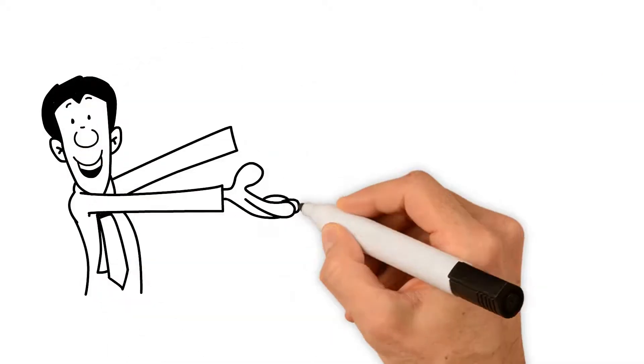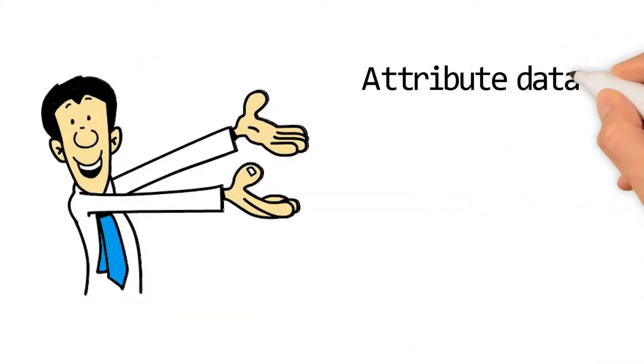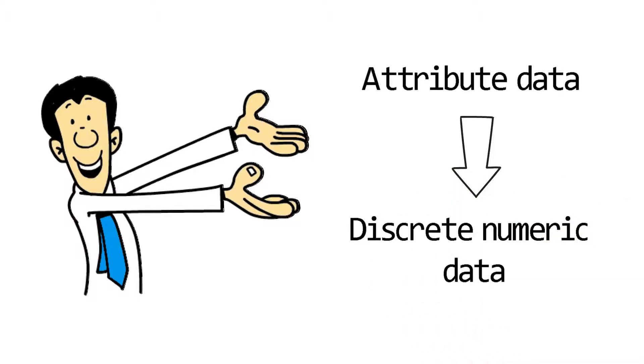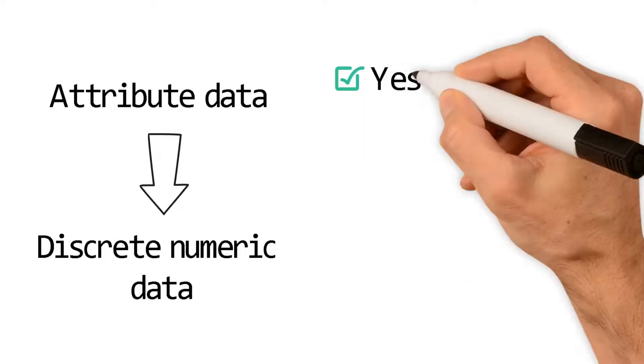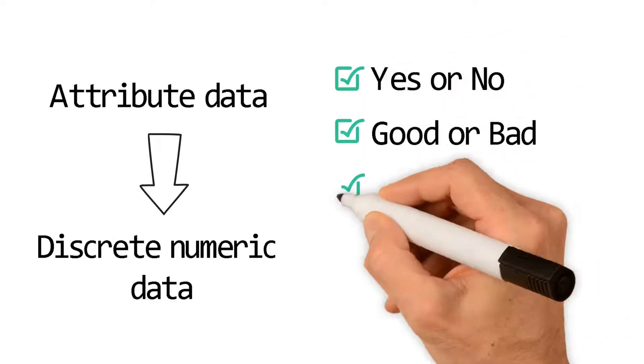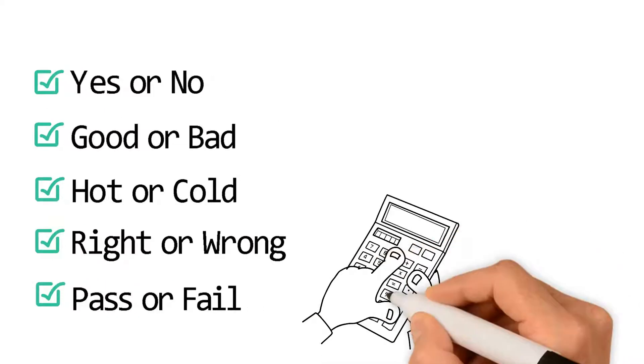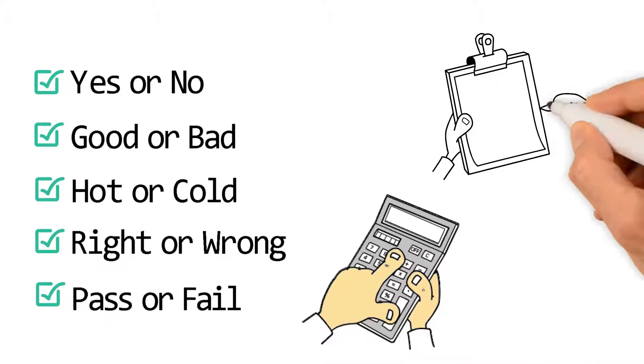Now, let's talk about attribute data. Attribute data can be counted and further refined into discrete numeric data. Attribute data acts as binary and can be said as yes or no, good or bad, hot or cold, right or wrong, pass or fail. In short, attribute data is something that can be counted in terms of numbers or can be described either as yes or no for recording an analysis.